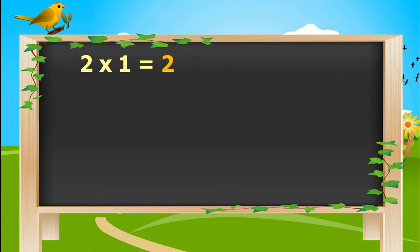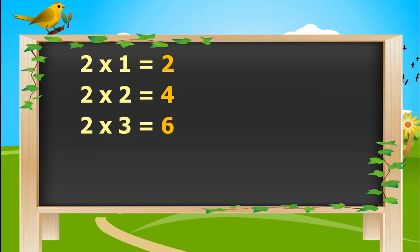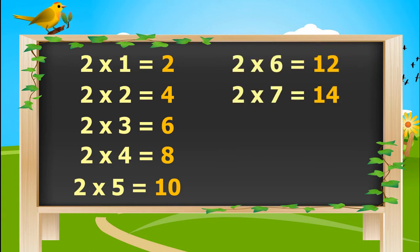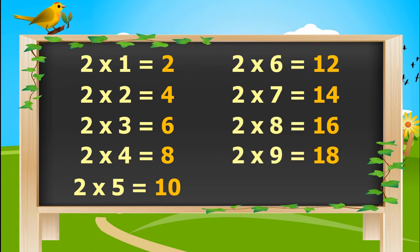2 ones is 2. 2 twos are 4. 2 threes are 6. 2 fours are 8. 2 fives are 10. 2 sixes are 12. 2 sevens are 14. 2 eights are 16. 2 nines are 18. 2 tens are 20.